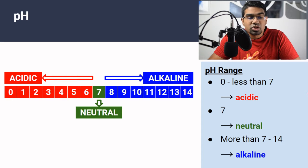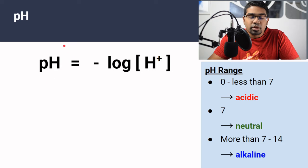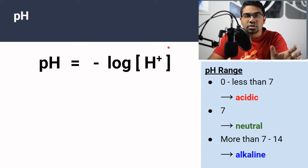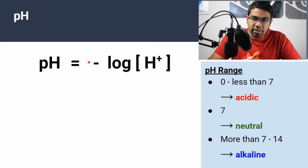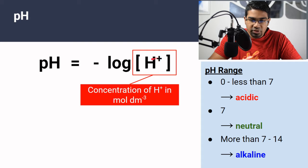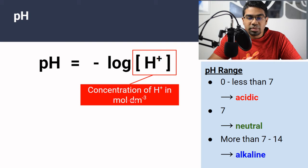But what is pH? pH is simply a quantification of the concentration of hydrogen ions — it is a way to quantify the concentration of hydrogen ions in a substance. This is done by taking the negative log of the concentration. The concentration of hydrogen ions in the solution is in moles per dm³ — this unit is very important.